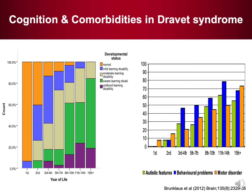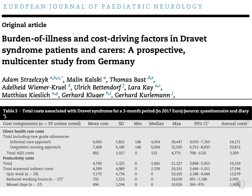Our work in 2012 showed how cognition and co-morbidities are affected in Dravet syndrome. On the left-hand side, illustrated is the developmental status of individuals over time — in the first, second, third year and so forth. What we could show is that in the first year of life, many individuals appear to be developmentally normal. However, there is an increase in mild learning disability to moderate and severe learning disability, whereas in teenage years nearly all individuals have significant learning disability. On the right-hand side, the increase over time of autistic features, behavioral problems, and motor disorders illustrates the disease phenotype, presenting not just with seizures but also with intellectual disability and many co-morbidities.